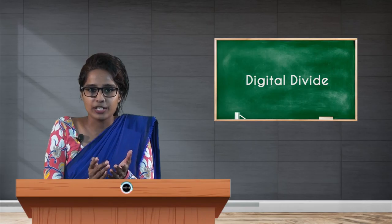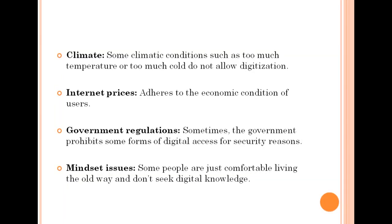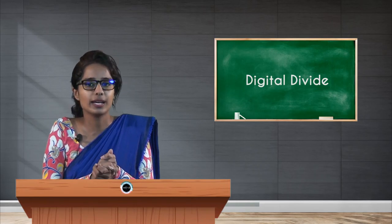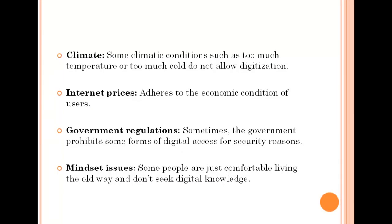Another problem can be climate — climatic conditions such as extreme temperatures or extreme cold can also pose a threat to digitization. In areas like Kashmir or regions with too much heat, digital divide is seen to be a major problem. Internet prices are also a sub-category of poverty, as prices are too high and not the entire population can afford access. Additionally, governmental regulations such as the government prohibiting some forms of digital access for security reasons have also been causes of digital divide in India.